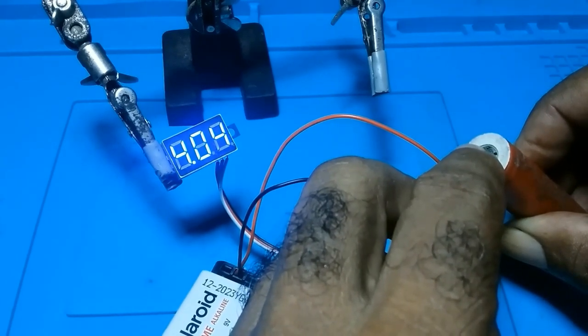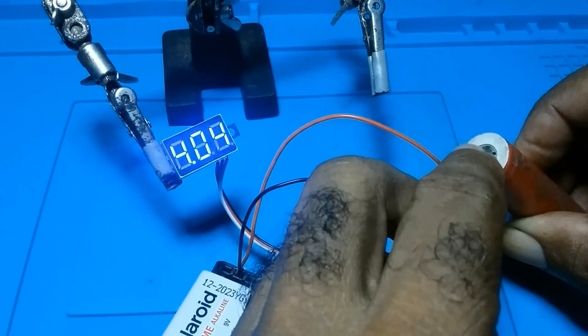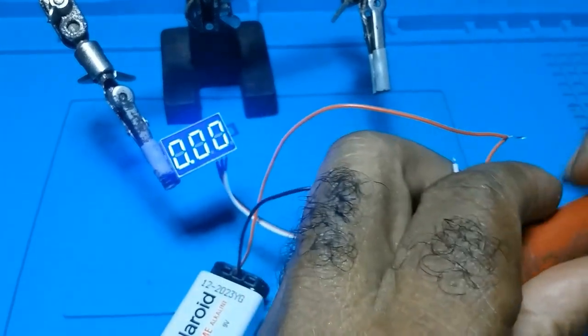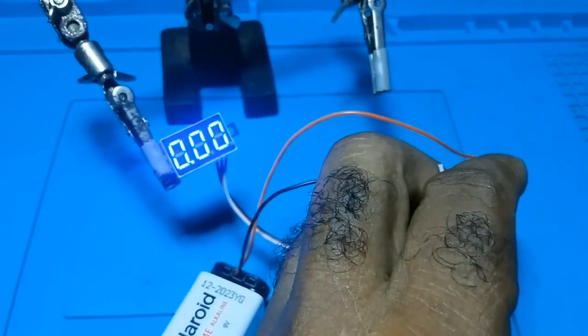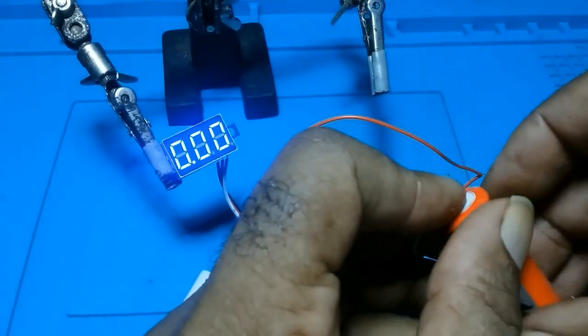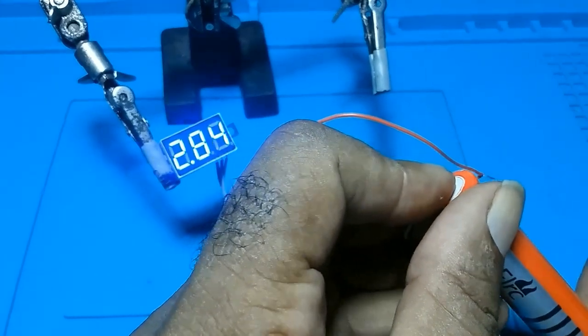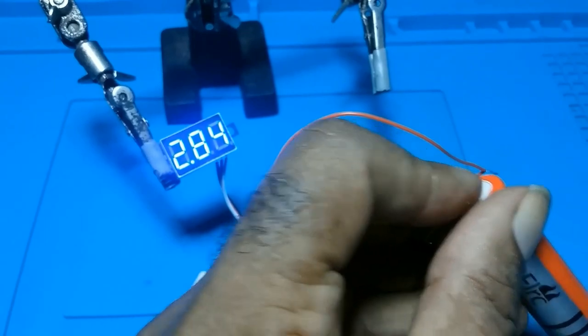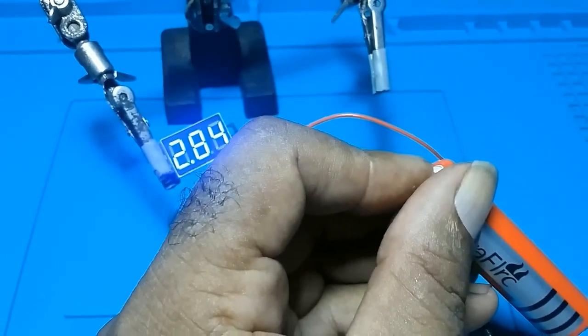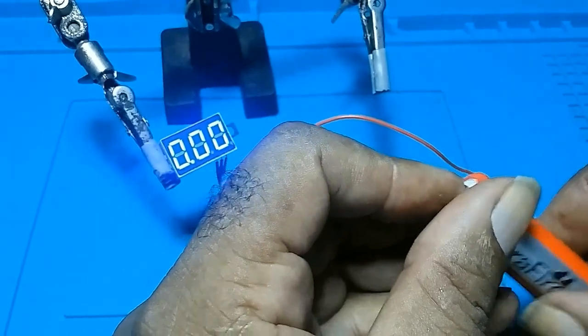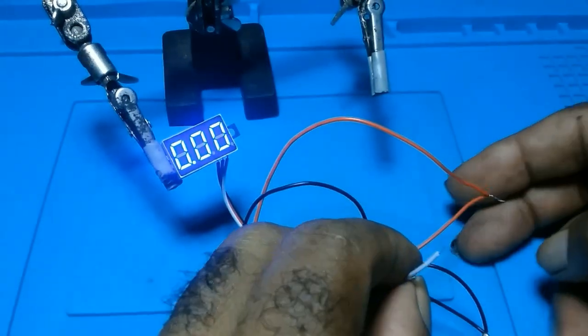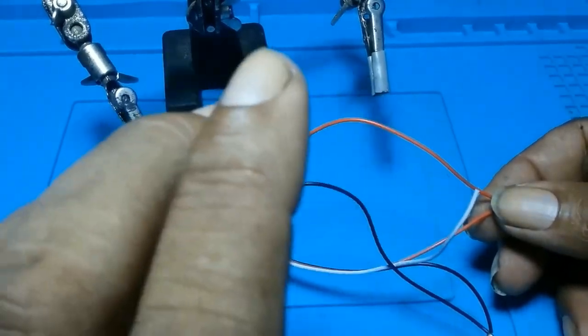The capacity of the battery is 4.04 volts. The capacity of this one is 2.84 volts. This is how you connect your three-wire voltmeter.